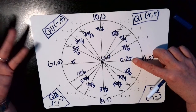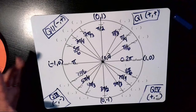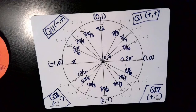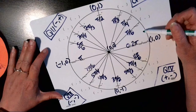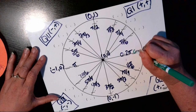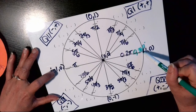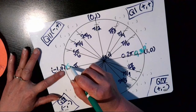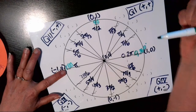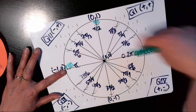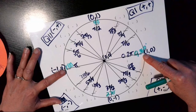Now the whole unit circle is filled in with radians. Using a new color, we can go around in degrees, which are generally easier. There are 360 degrees in a full circle, so 0 and 360 are at the same point. Half of 360 is 180, and half of 180 is 90. Counting by 90s: 1×90 = 90, 2×90 = 180, 3×90 = 270, and 4×90 = 360. Those are the four quadrantal degree angles.